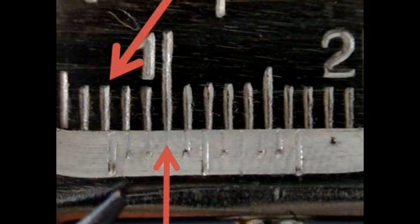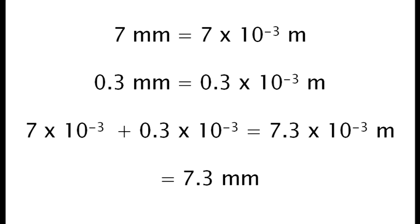Now, find the point where the two metric scales line up and count the number of divisions on the bottom scale up to this point. In this case, there are three. So the seven millimeters from the first scale plus the three tenths of a millimeter from this scale give a total of 7.3 millimeters for the distance measured.